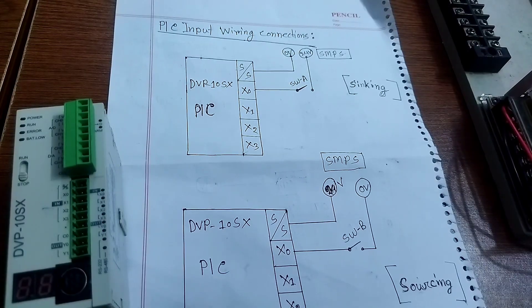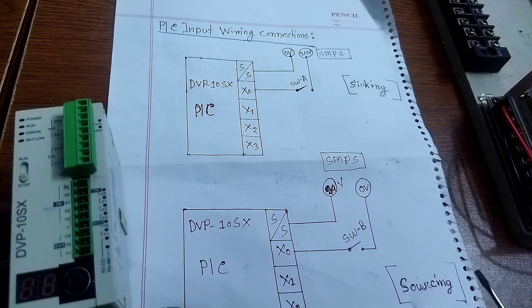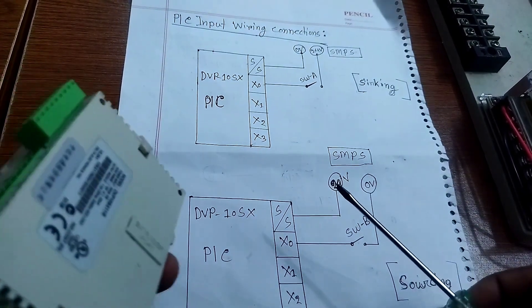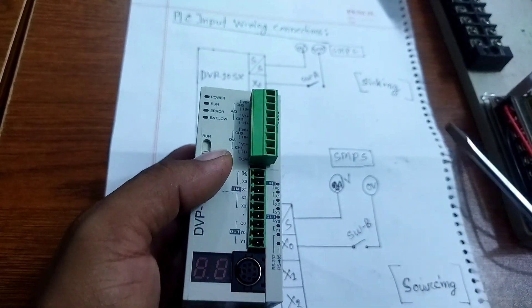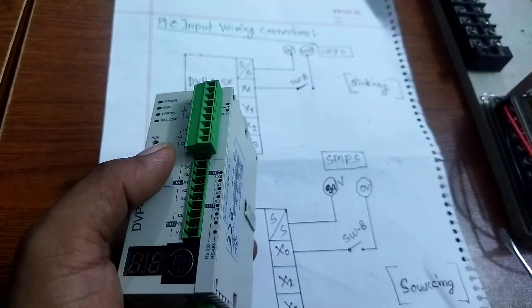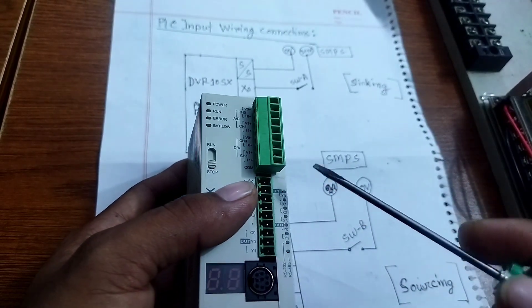Hello guys, welcome to our channel. Today we are going to discuss PLC input ordering and output PLC ordering. There are two types of PLC ordering: sinking and sourcing.